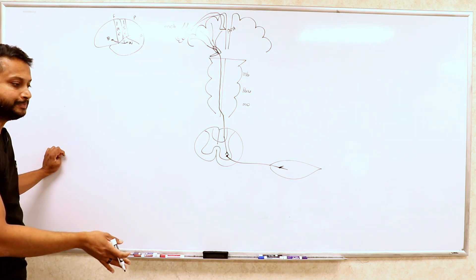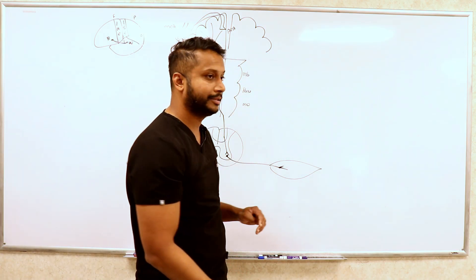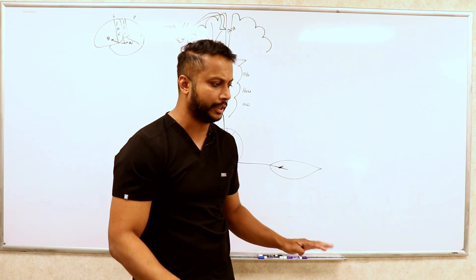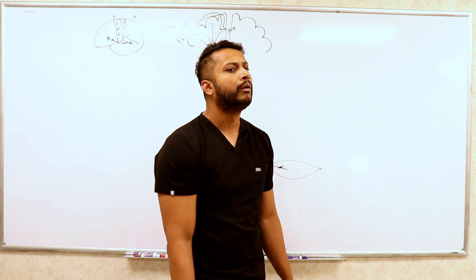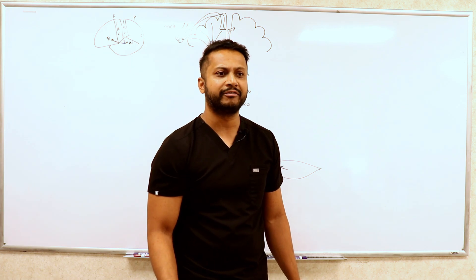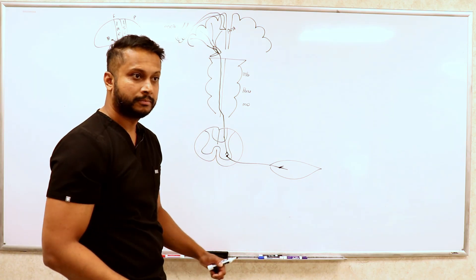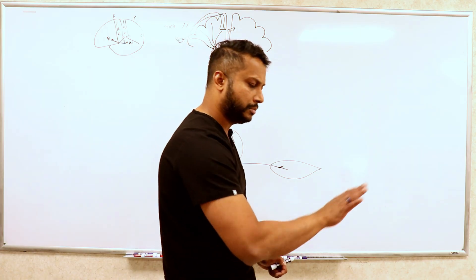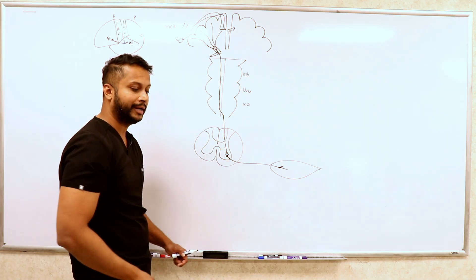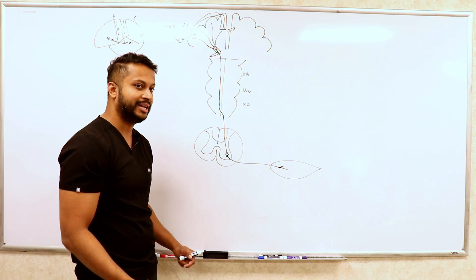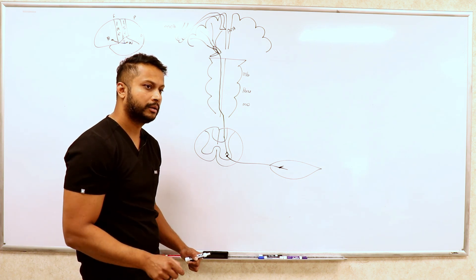If a person has a stroke at the level of the internal capsule — upper and lower limbs both equally weak — what happens to tone? Increased. What happens to reflexes? Increased. What if the patient has a spinal cord cross-section? What would happen to tone on the affected side — elevated or low? Low. What about reflexes? Low.